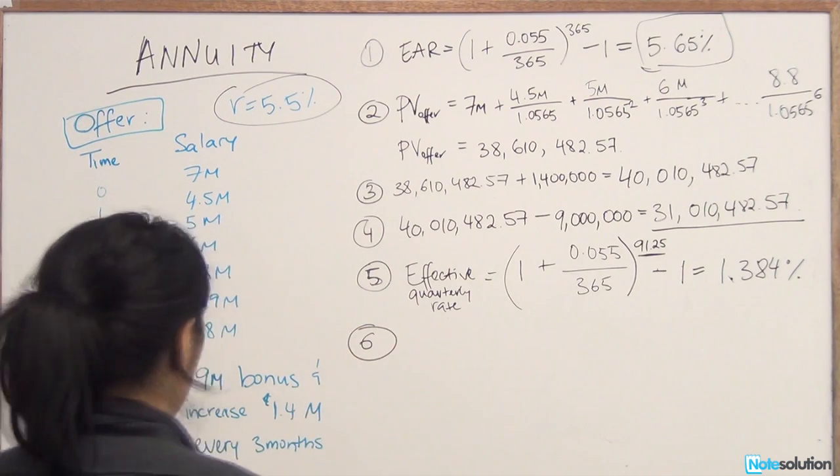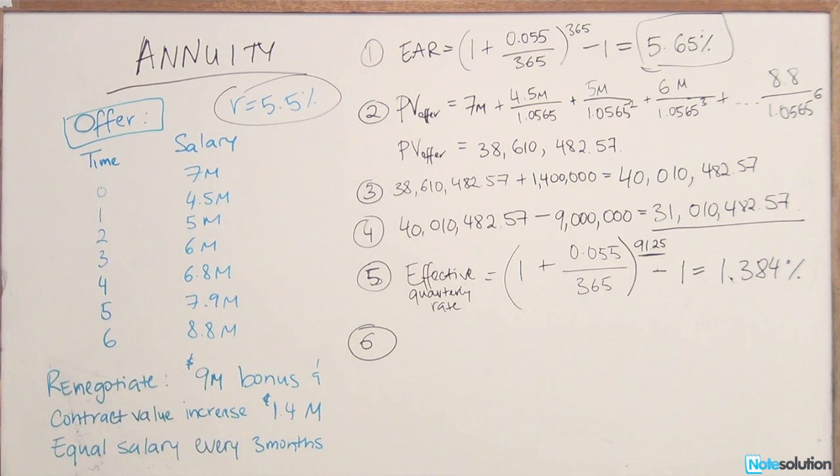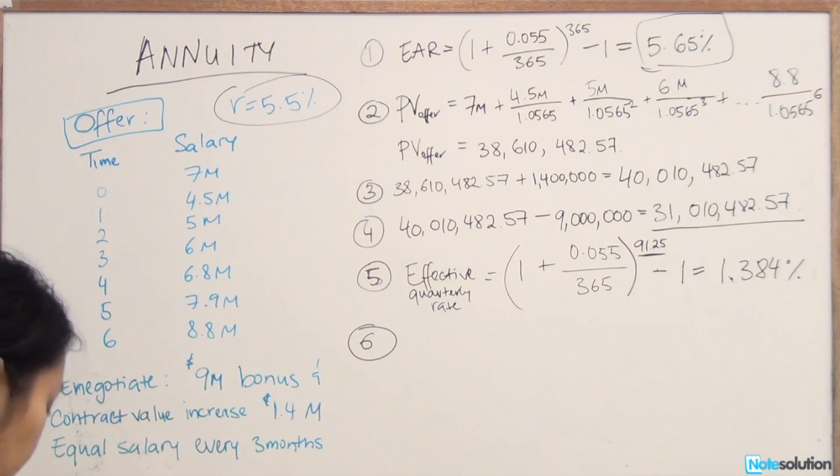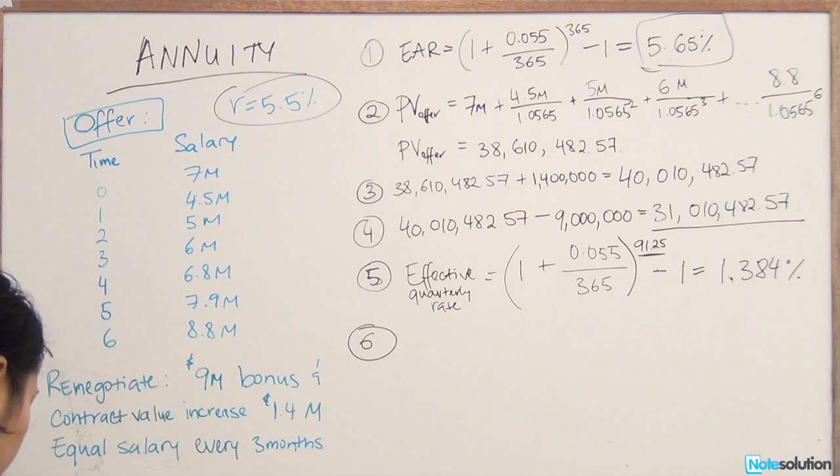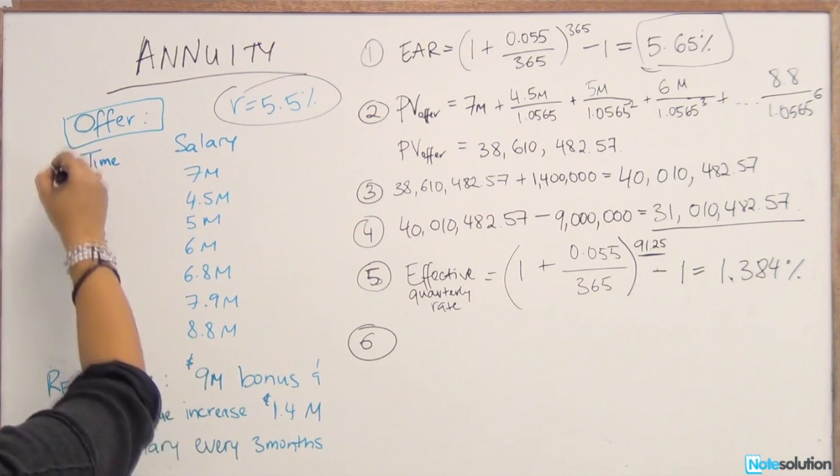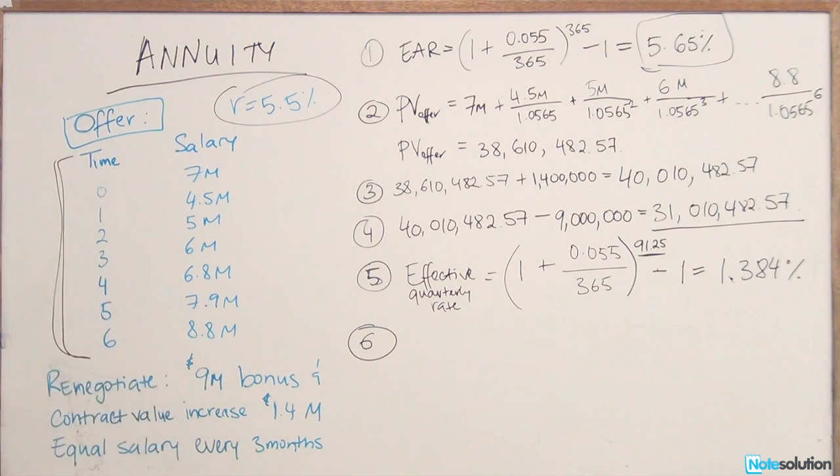So step 6. Finally, we have all the terms we need to calculate the payment every three months. We have the interest rate, which is 1.384%. We have the length of the annuity, so we know that it's going to last for six years. And we have the present value.